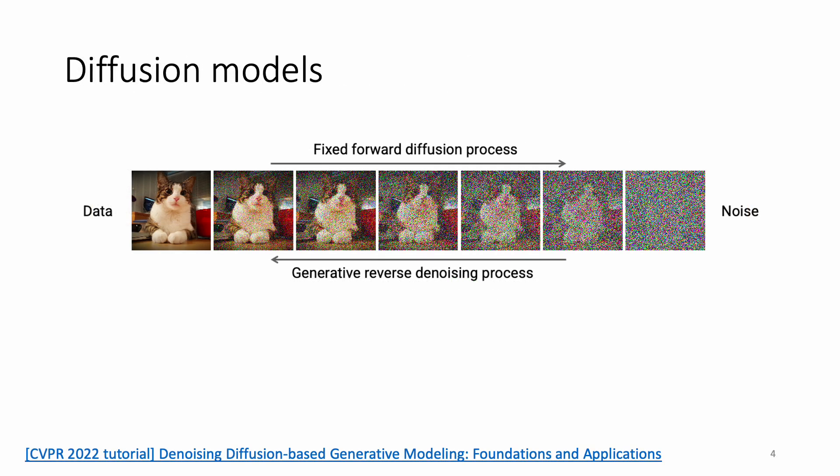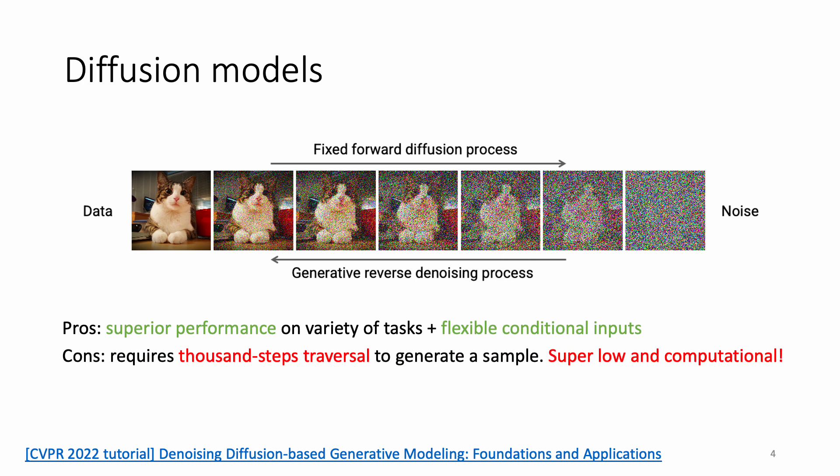Before going to details, we first have a quick look at diffusion models and their remaining challenges. Diffusion models are based on Markov chains, which includes a diffusion process to gradually distort data with Gaussian noise and a denoising process to sample data from pure noise. Though diffusion models offer favorable performance on several tasks, they still suffer from slow sampling processes which require 100 to 1,000 steps.